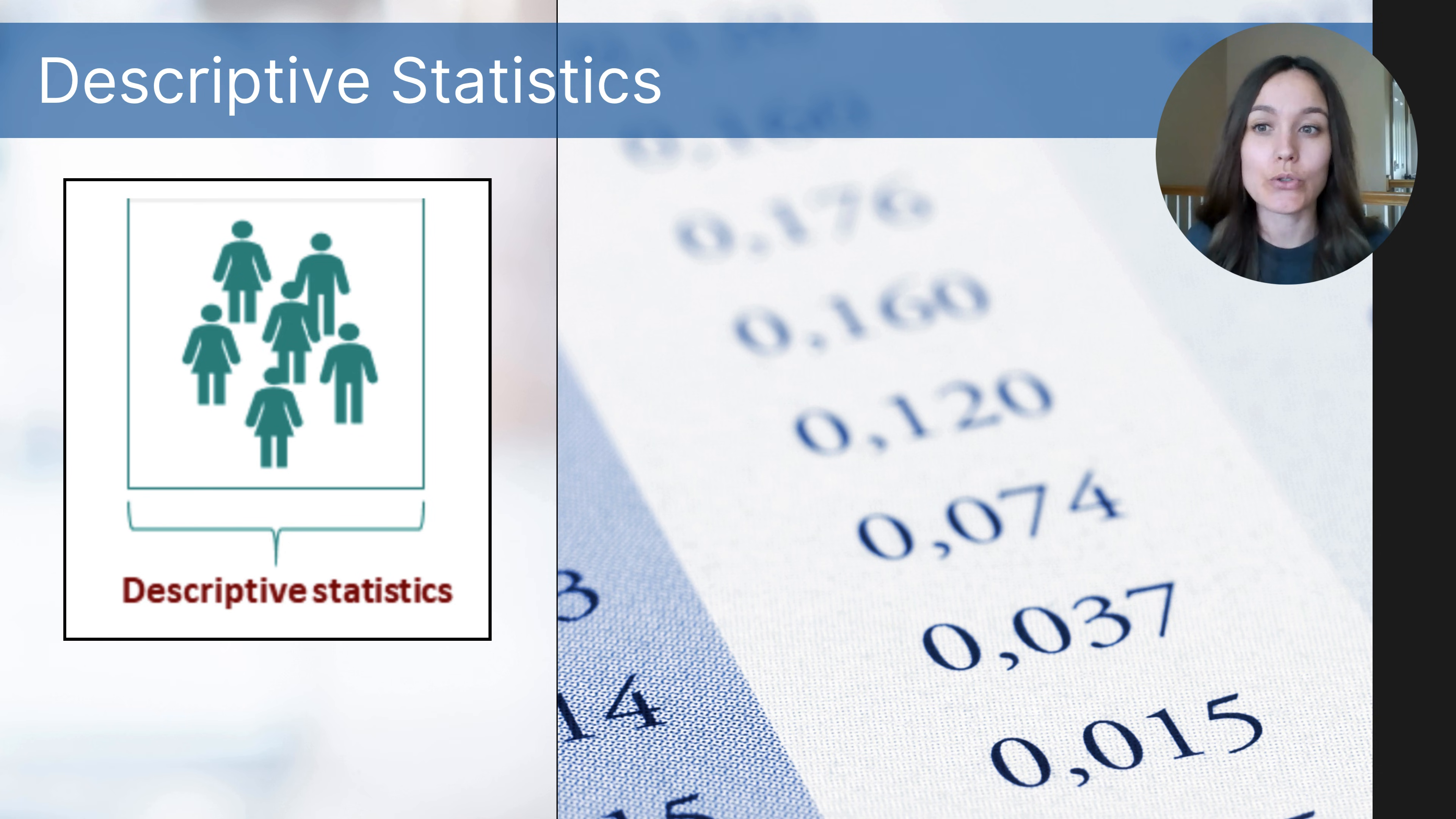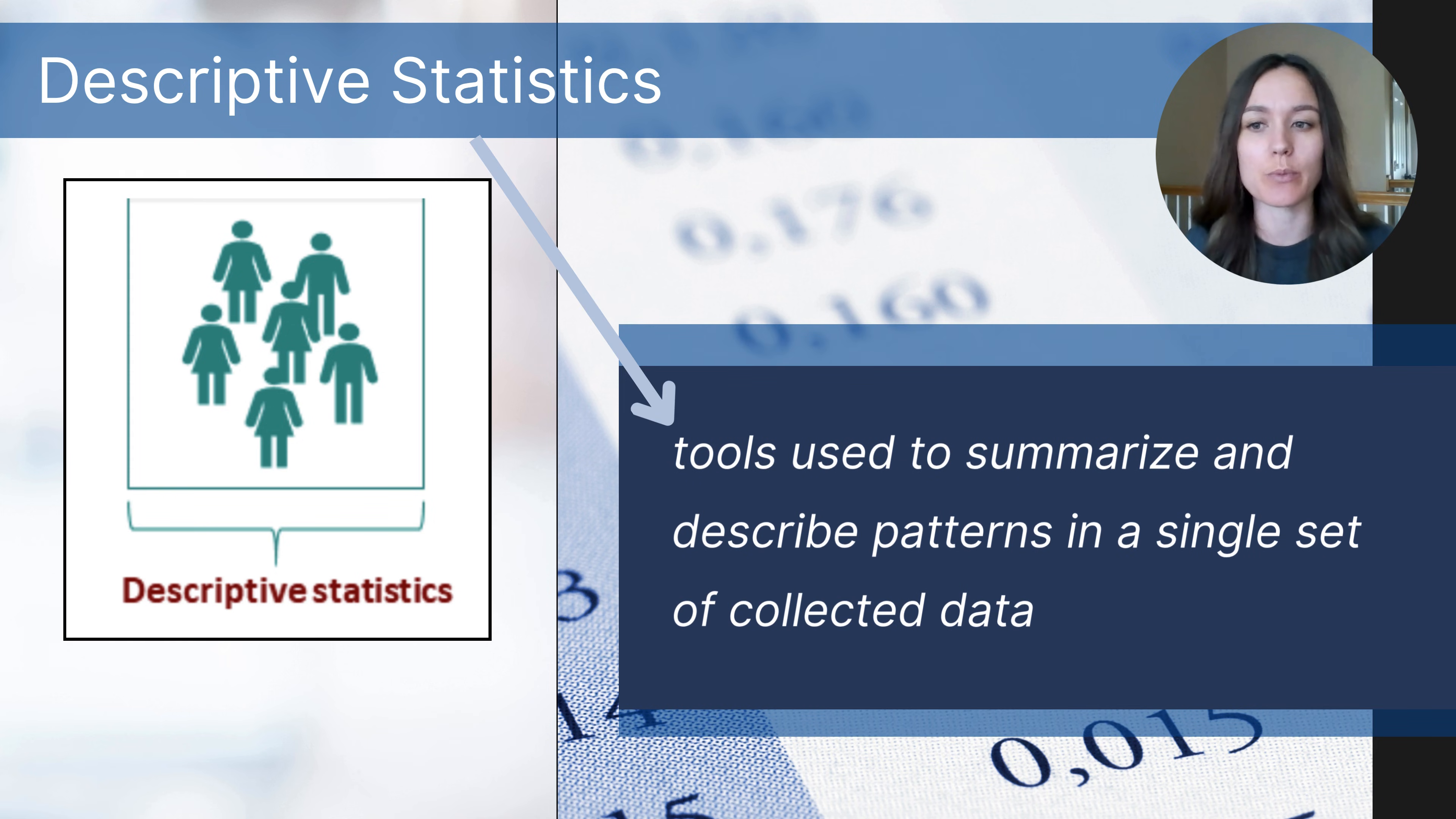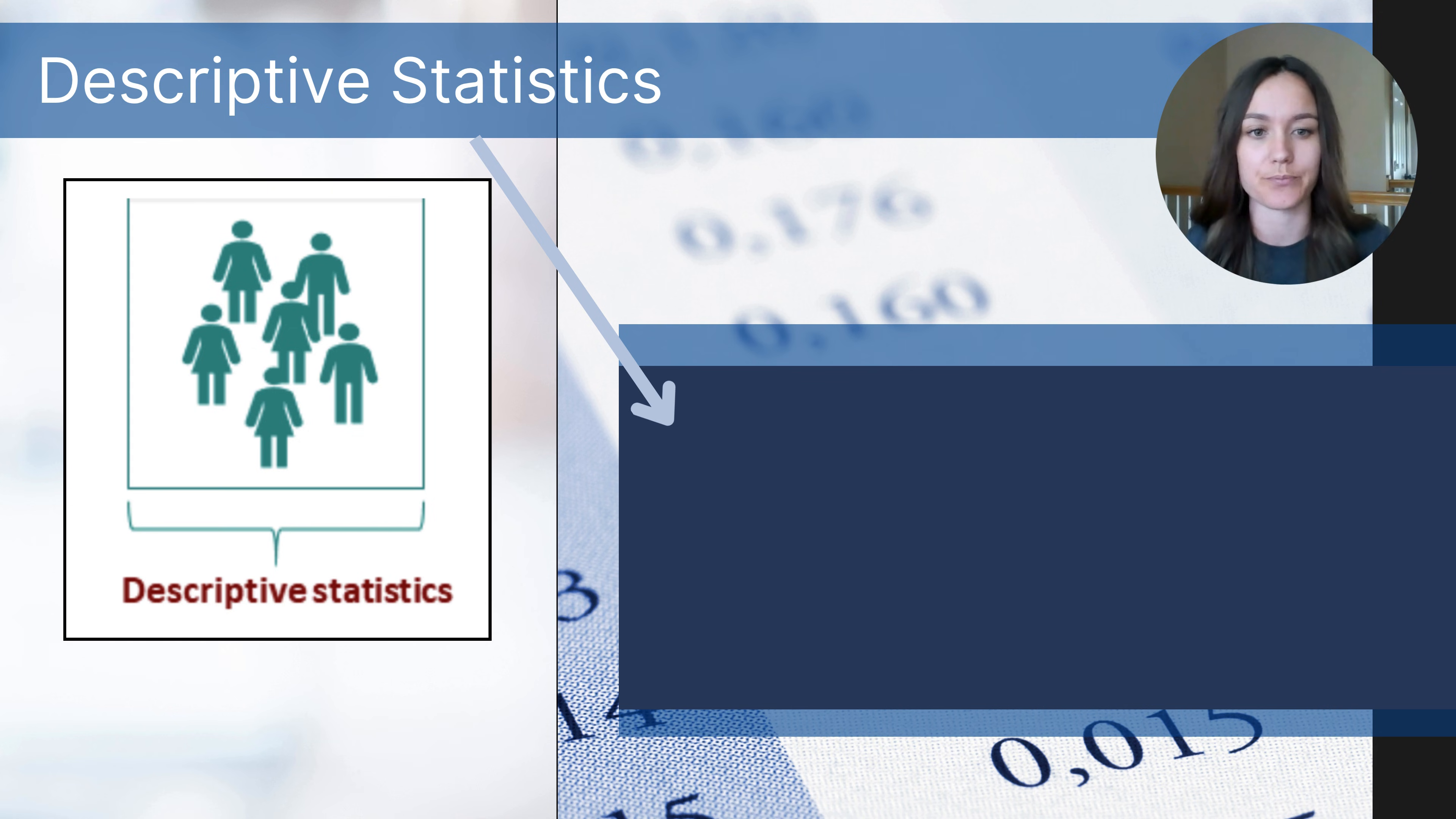There are two different types of statistical data analysis, and one is called descriptive statistics. Descriptive statistics are measurement tools that we use to describe that single set of data that we have collected.